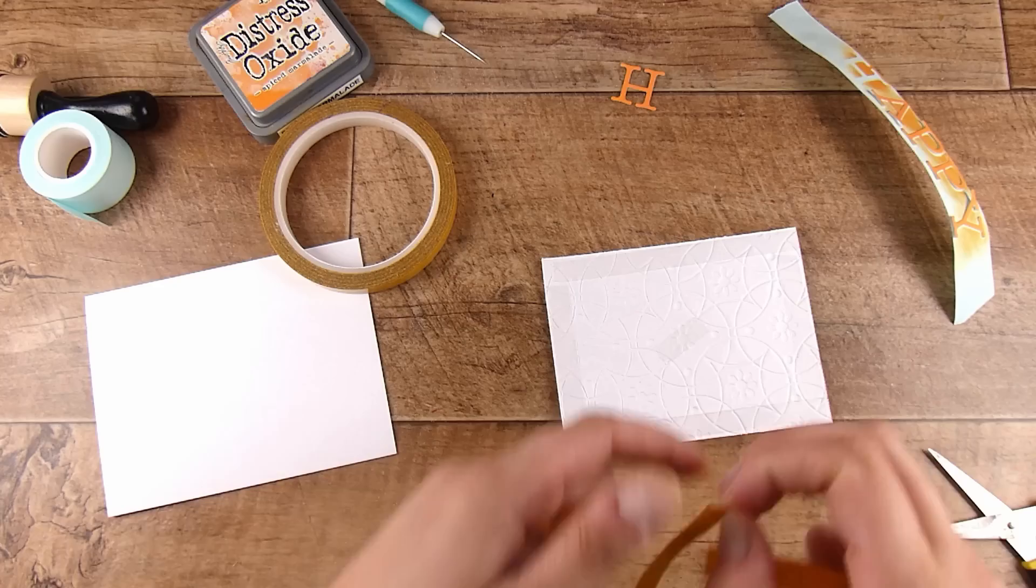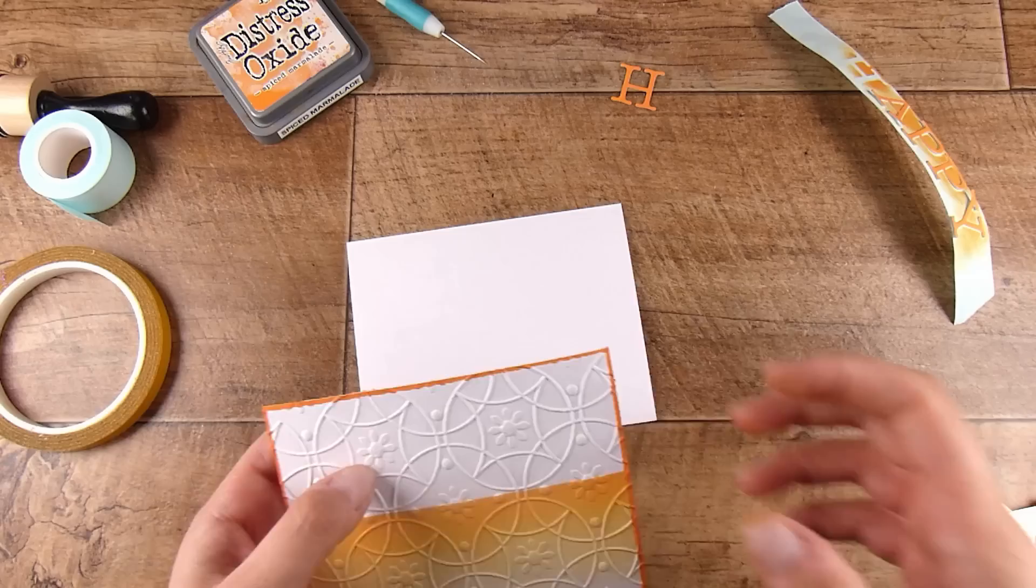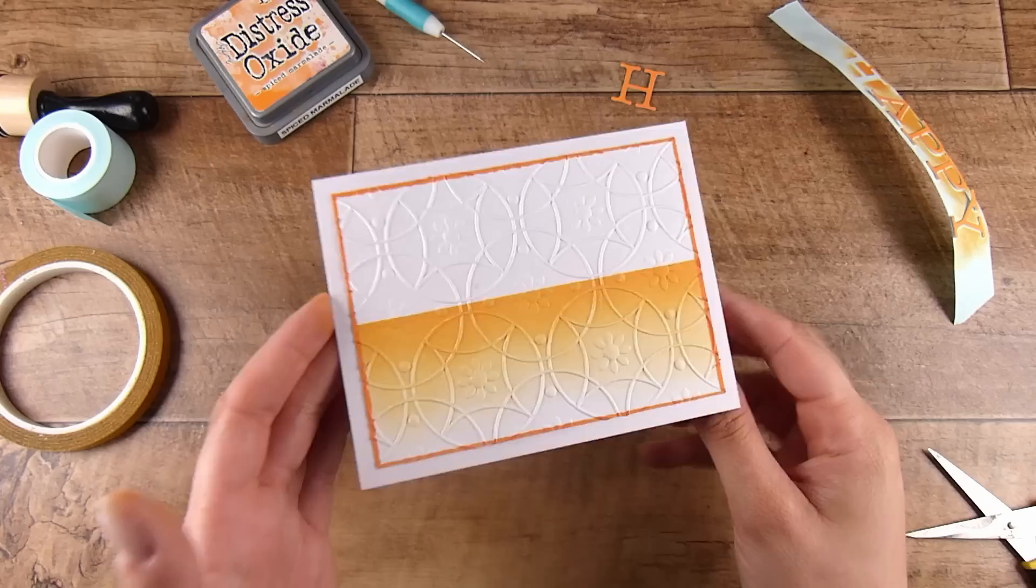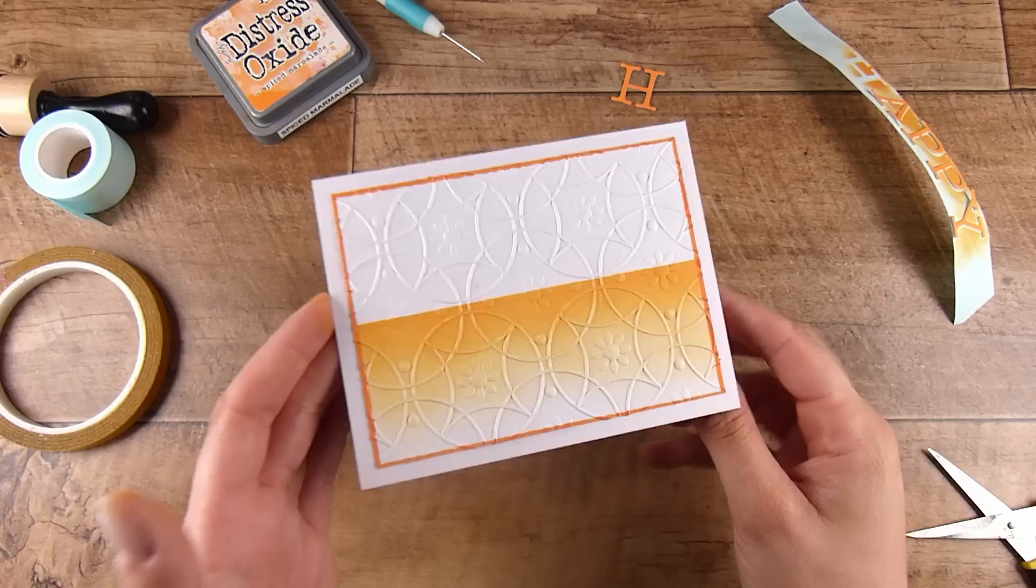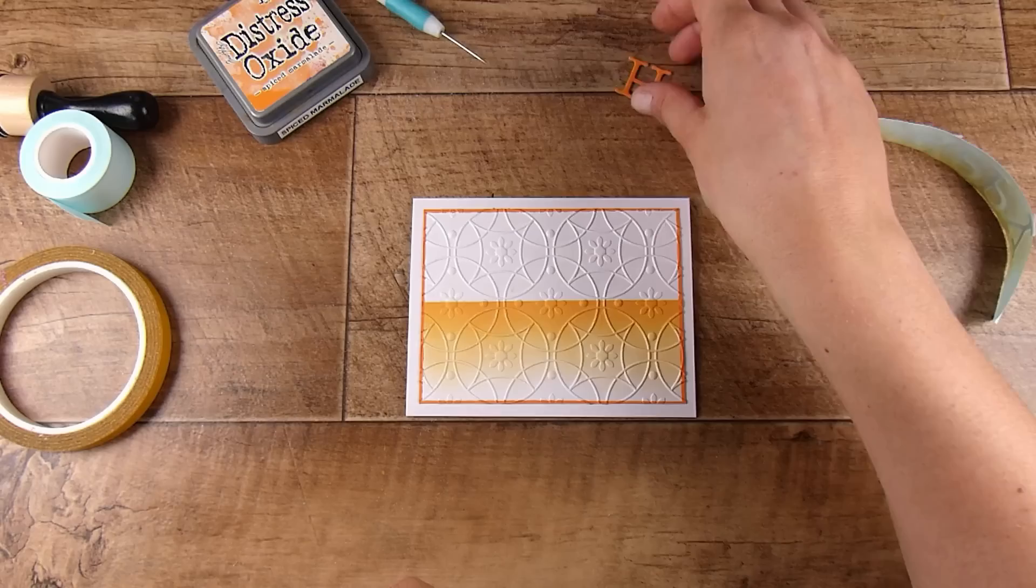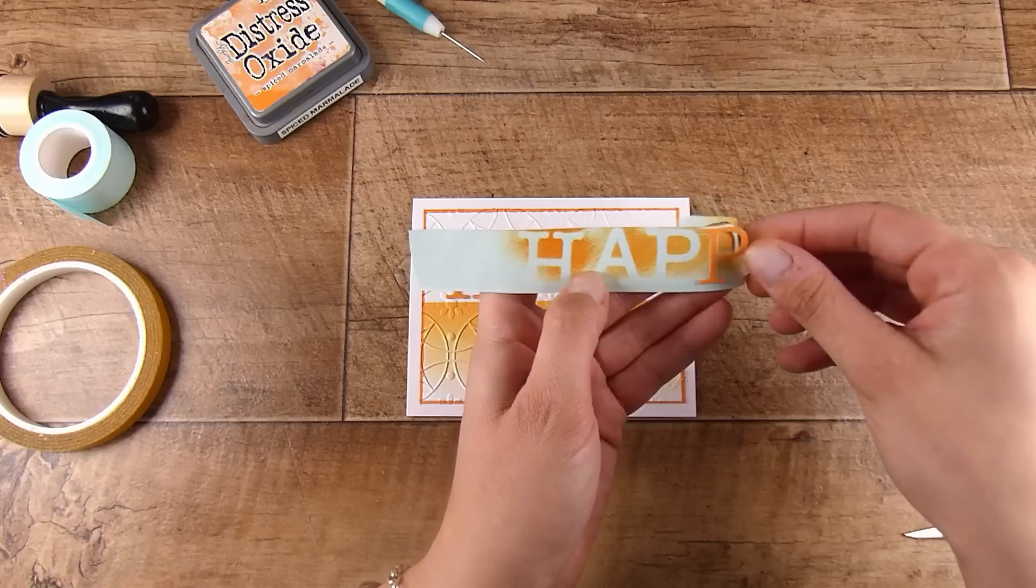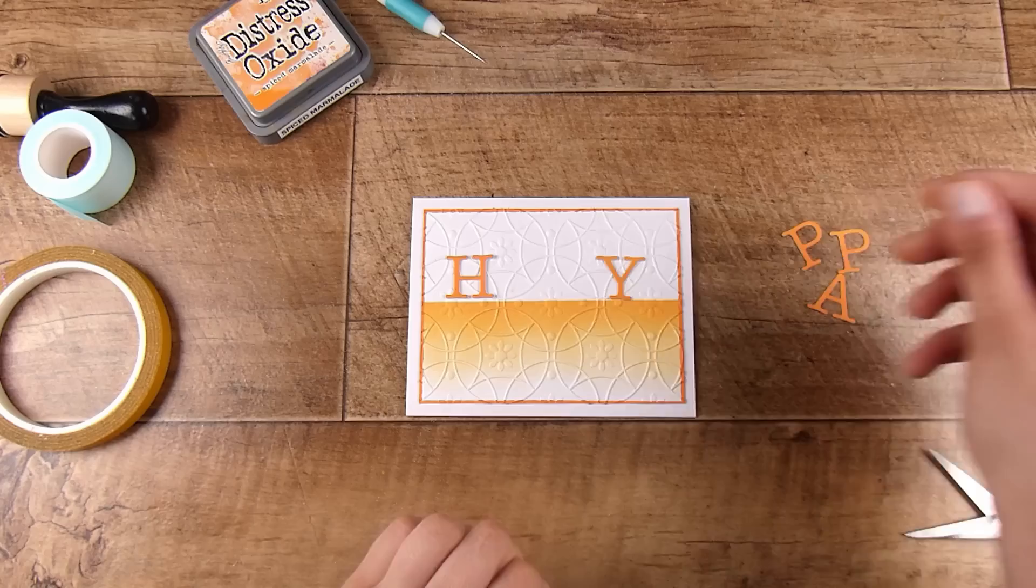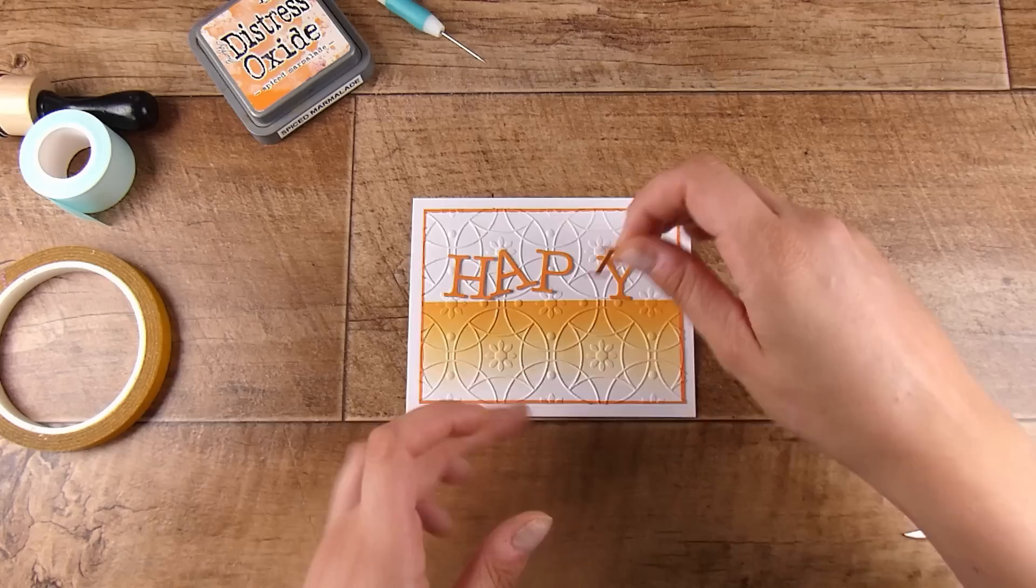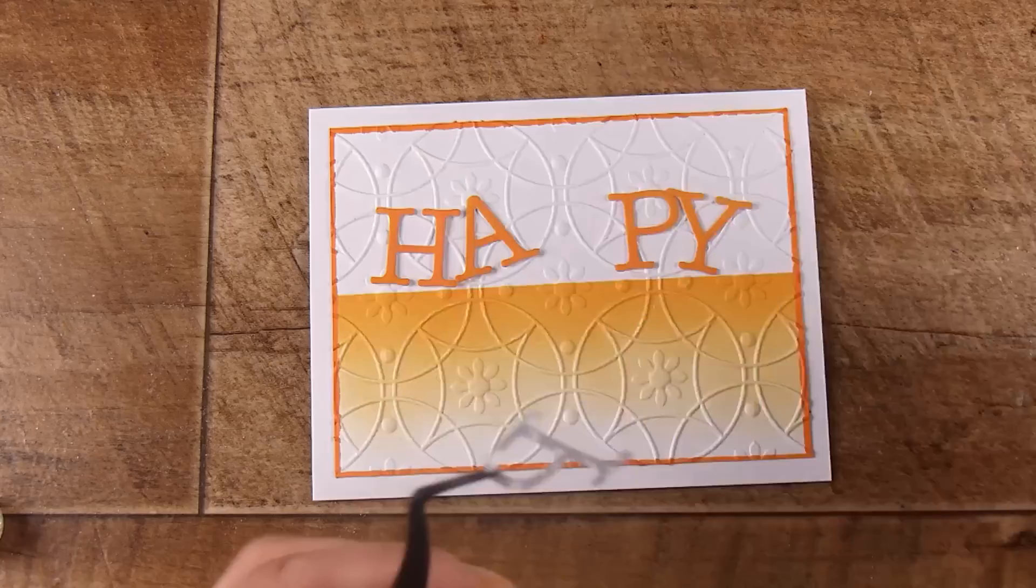I'm adding double-sided tape to the back and popping this down onto a four and a quarter by five and a half inch card base. From here you could add twine, ribbon, little enamel dots at the points where they intersect in the embossing folder, or make a pattern. I'm keeping this really happy and simple with the word HAPPY across the top. This could truly be a one-color card—just add the birthday part stamped in the same color.